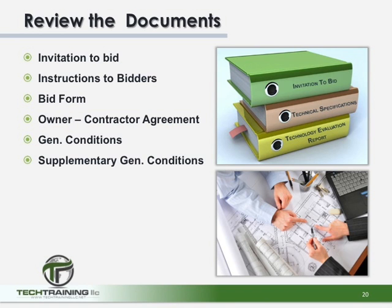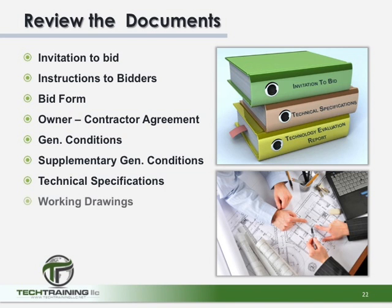The general conditions are followed by the supplementary conditions, often referred to as the special conditions. This section of the contract is used to amend or supplement portions of the general conditions because all conditions vary. Next is the technical specifications — the written word of the project. Following this section is the working drawings, the actual illustrations of the project showing exactly how various items are to be built. And lastly, addenda — addenda can be drawings or technical information that modifies the contract documents after they have been issued to bidders but before any bids have been taken.